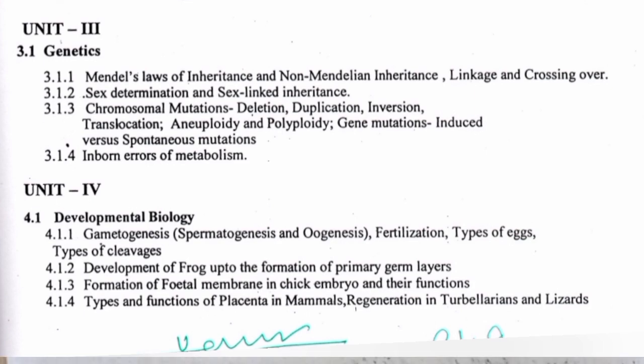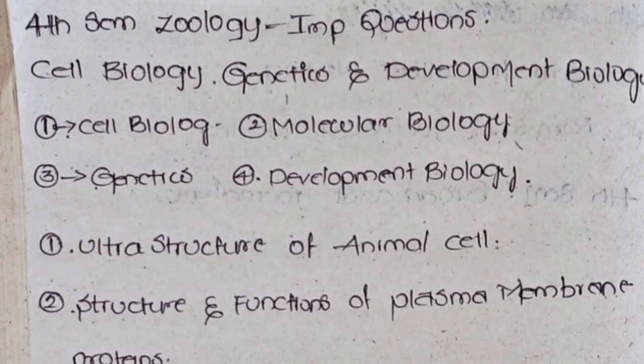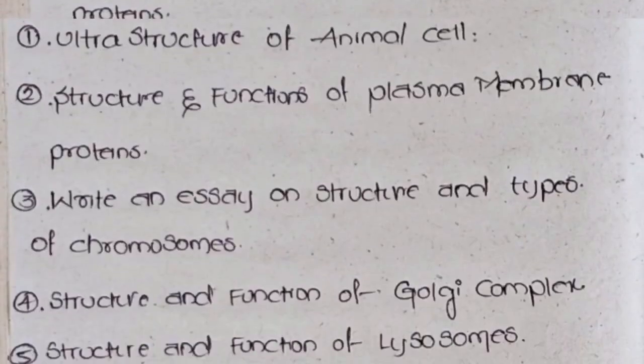First, Ultra Structure of Animal Cell. Second, Structure and Functions of Plasma Membrane Protein. Third, Write an Essay on Structure and Types of Chromosomes. Fourth, Structure and Function of Golgi Complex. Fifth, Structure and Function of Lysosomes.